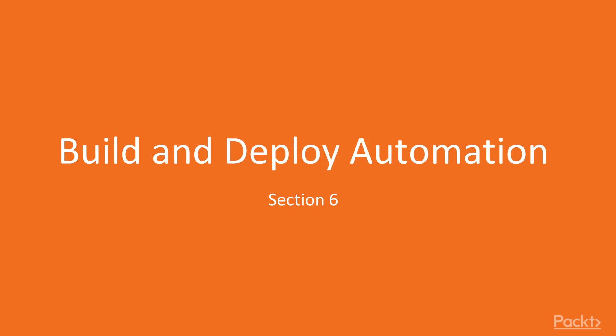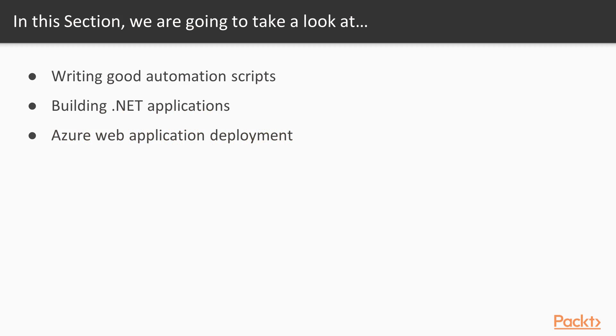Hi, and welcome to this section on build and deploy automation. In the previous section, we talked about how to provision Azure resources using PowerShell. We will also be revisiting Azure in this section. We will talk about how to write good automation scripts in general, before we dig into building .NET applications from PowerShell. And finally, we will see how we can set up and customize automated build and deployment to an Azure web application.